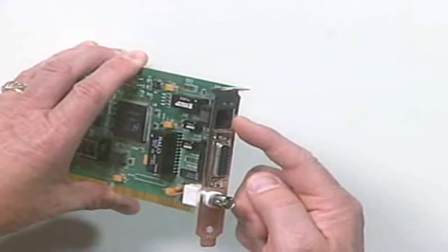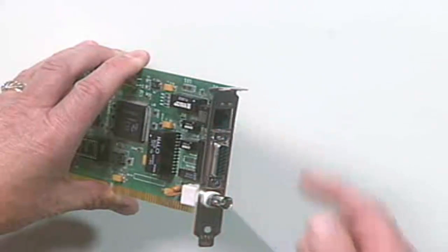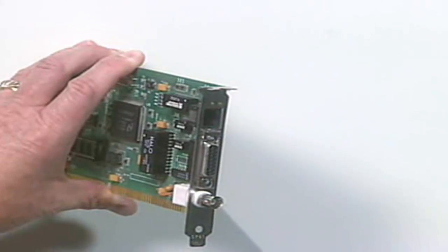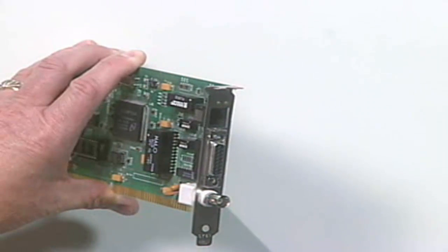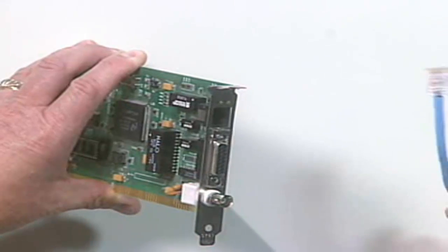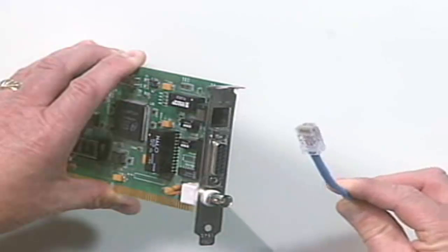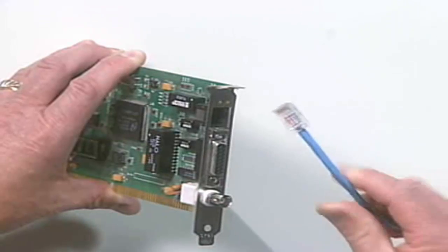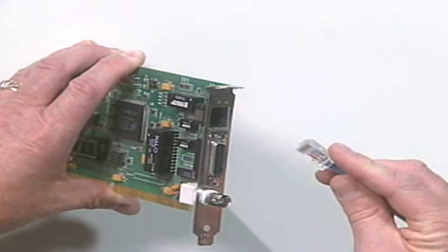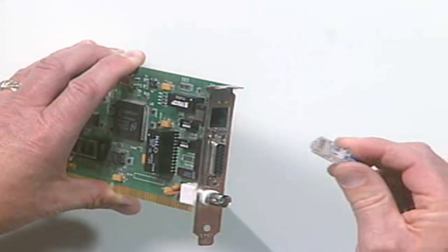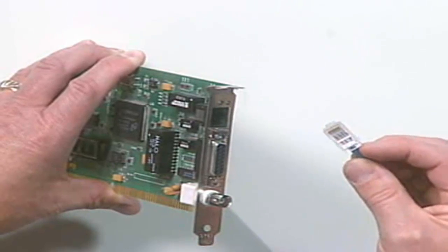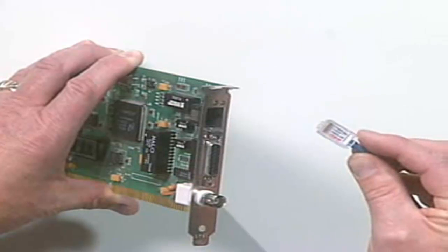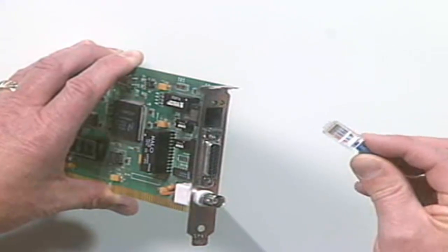The 10-base-T connector uses a physical star topology. We have one network cable that runs to each network interface card on the network, and they're all connected together with a central connecting point called a hub or a switch. The media that's used is unshielded twisted pair. This is an example of a piece of unshielded category 5E, unshielded twisted pair wiring, and it uses a connector called the RJ-45 connector. It really looks like a telephone plug. It's just a little bit larger. If you were to compare the telephone plug with the RJ-45 connector side to side, you would see that they're very similar in appearance and construction, just that the RJ-45 is much bigger.